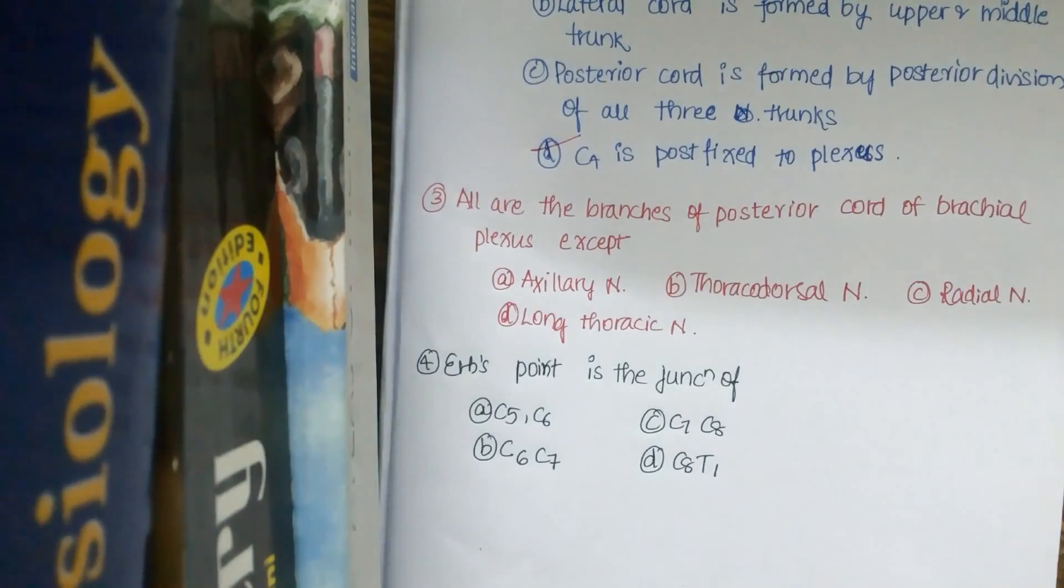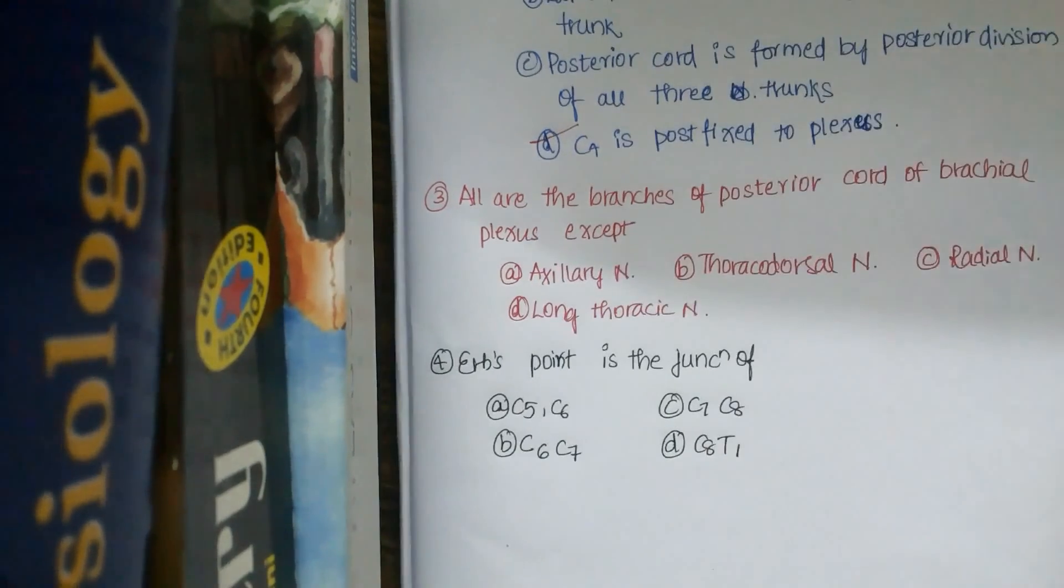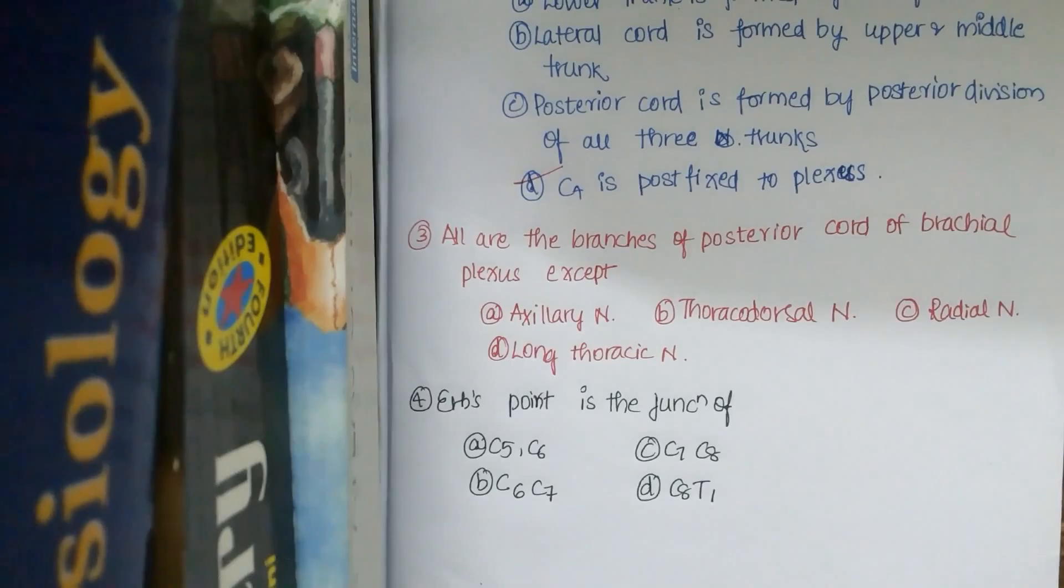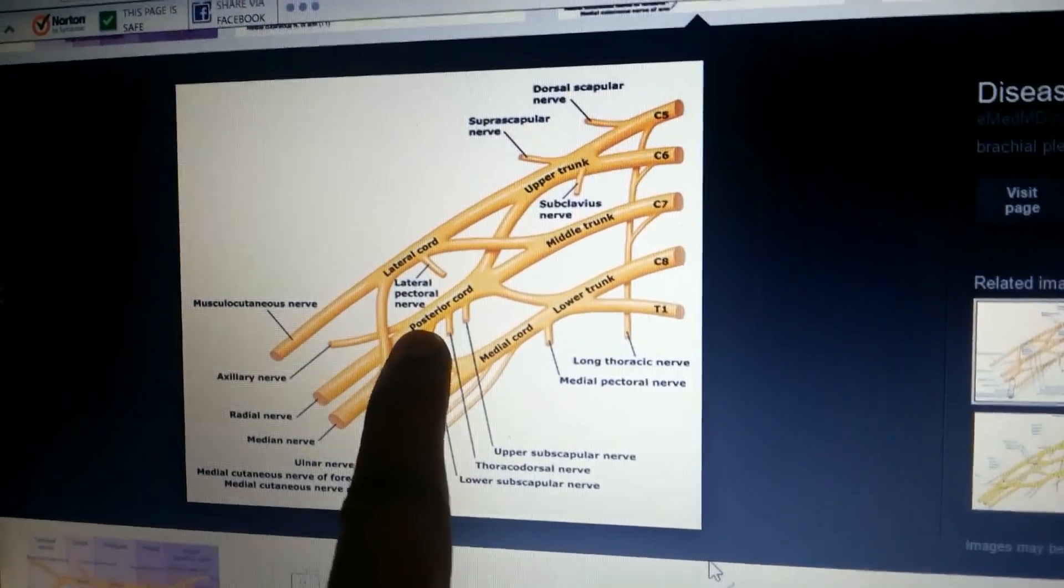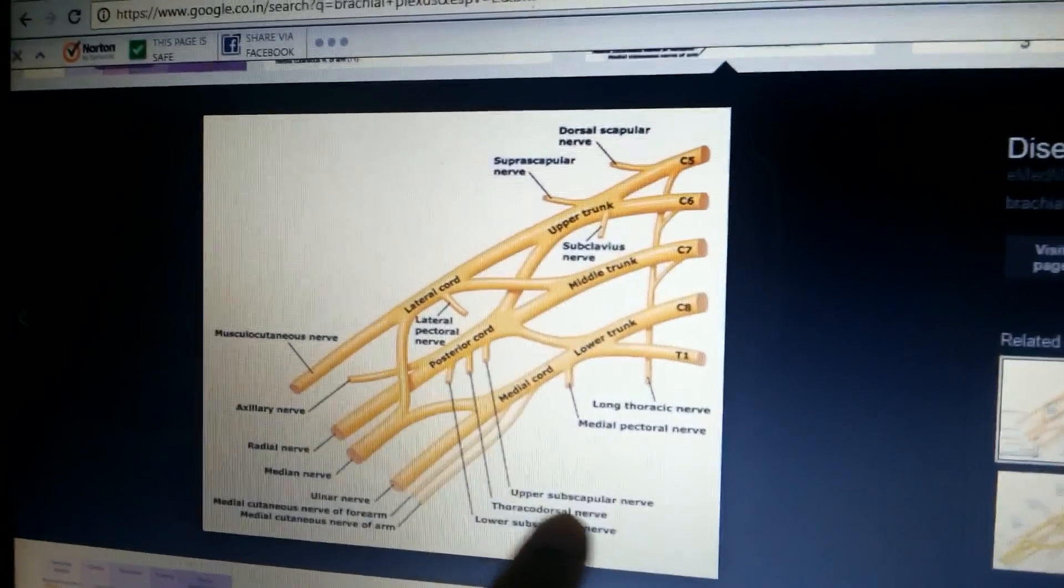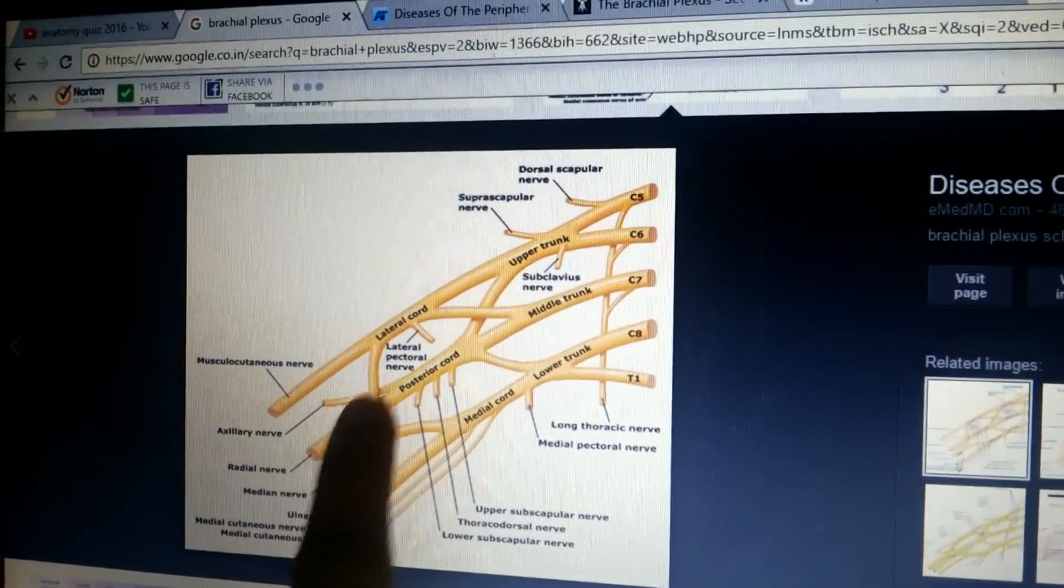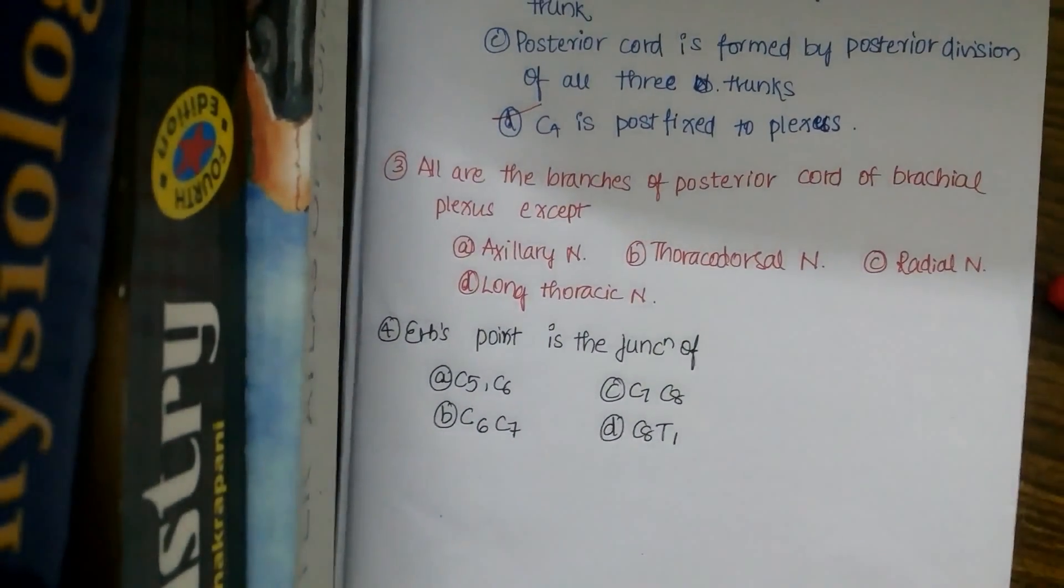Question 3: All are branches of posterior cord of brachial plexus except. I've already told you the mnemonic for posterior cord: ULTRA. The posterior cord is this one: upper subscapular nerve, thoracodorsal nerve, lower subscapular nerve, axillary nerve, and radial nerve.